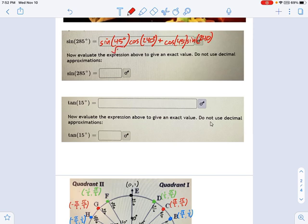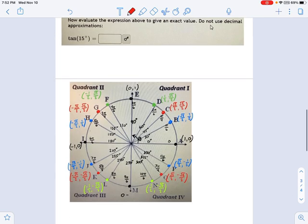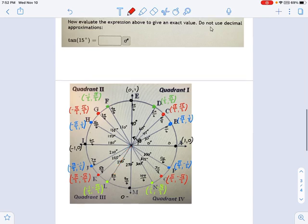So sine of 45 is radical 2 over 2. Cosine of 240. Do you remember this one? Try to think about it before I scroll down. It's going to be the x direction, and 240 is almost 270. So it's an arrow that's pointing mostly down but a little bit to the left. That's going to be negative 1 half. And you see what I'm talking about? It's going a little to the left, so that's not very far in the x direction to the left. So that is negative 1 half.